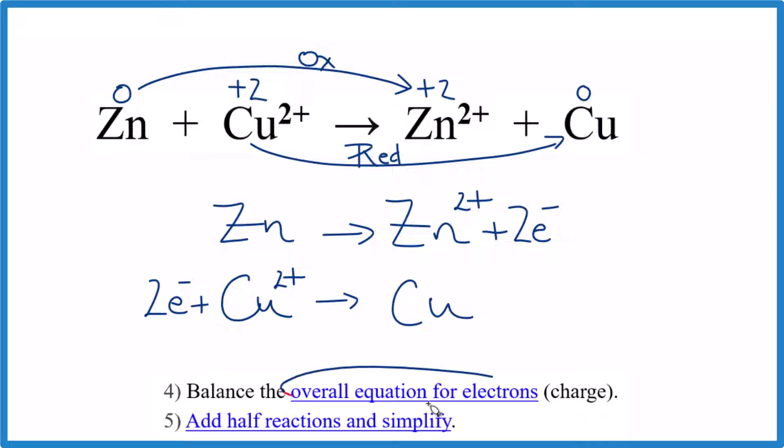Now we would balance the overall equation for charge. The good thing is we have two electrons here and two electrons here. So we don't need to do anything. They're the same. In fact, they're the same electrons. Zinc lost these two. Copper got them. It was reduced.